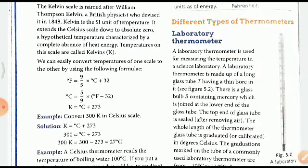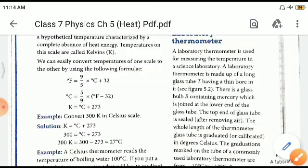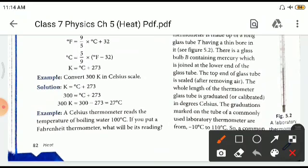Now we have different types of thermometers depending upon their usage. A laboratory thermometer is used for measuring temperature in a science laboratory. A laboratory thermometer is made up of a long glass tube having a thin bore. There is a glass bulb containing mercury which is joined at the lower end of the glass tube. The top end of the glass tube is sealed after removing air. The whole length of the thermometer glass tube is graduated in degrees Celsius.